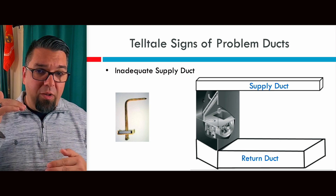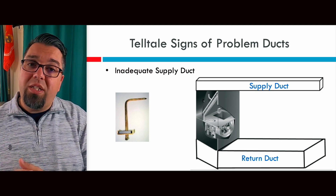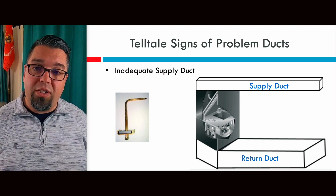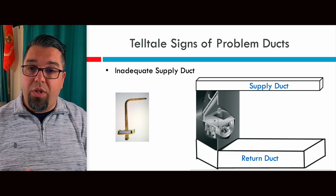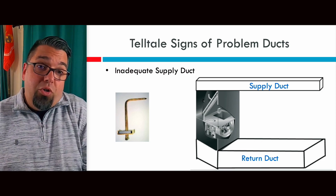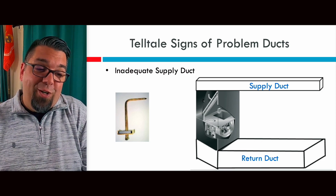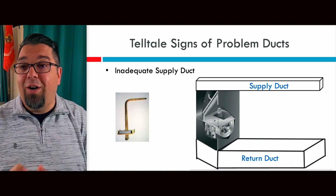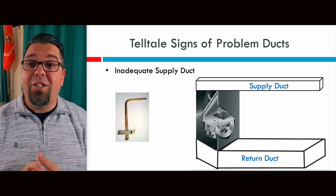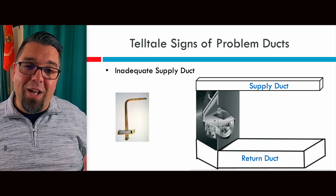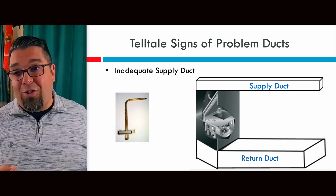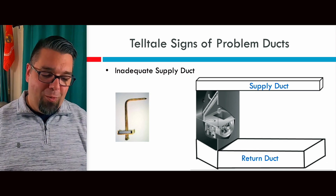Supply and return should be fairly balanced. If you have inadequate supply ducts, you're going to see much higher static pressure in the supply when measuring with a static pressure probe and a simple dual-input manometer. You could use an incline manometer or something that uses water like the old Dwyer gauges — most people don't use that anymore, particularly because if you have really high static pressure, it could suck that fluid right into the return. I've done that more than once.